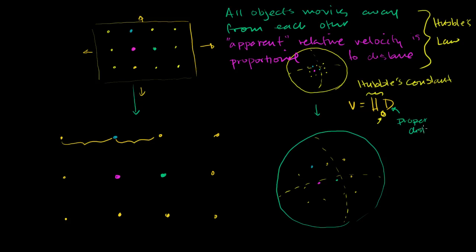Proper distance now is very important, because that proper distance is constantly changing as the universe expands — so the 'now' will actually change slightly from the beginning of this video to the end of this video, but we can roughly say in our current period of time. When we say proper distance, we're talking about if you actually had rulers and were to lay them down instantaneously — obviously we can't do that, but we can imagine doing something like that.